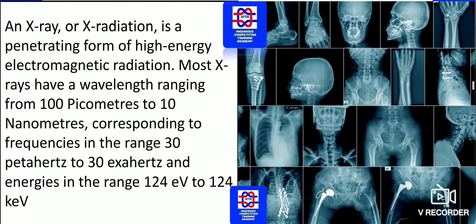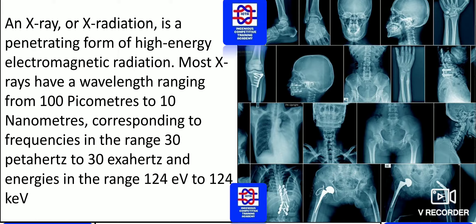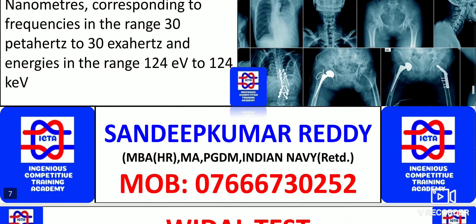And X-ray — X-radiation is a penetrating form of high-energy electromagnetic radiation. Most X-rays have a wavelength ranging from 100 picometers to 10 nanometers, corresponding to frequencies in the range of 30 petahertz to 30 exahertz, and energies in the range of 124 electron volts to 124 kilo-electron volts. In the radiological department, this type of X-radiation is performed.